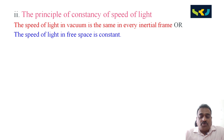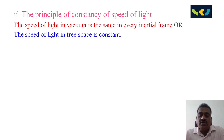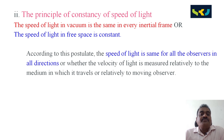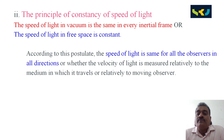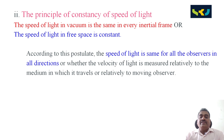According to this postulate, the speed of light is the same for all observers in all directions, whether the velocity of light is measured relative to the medium in which it travels or relative to a moving observer.